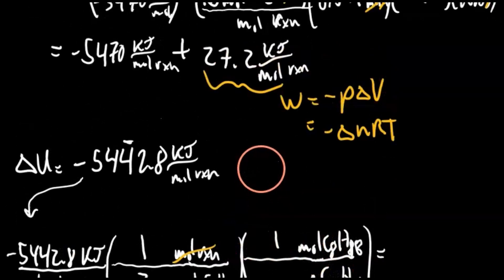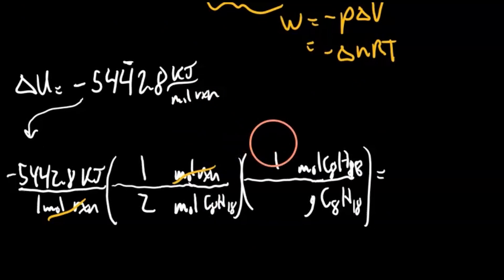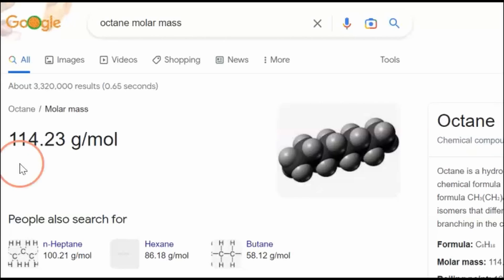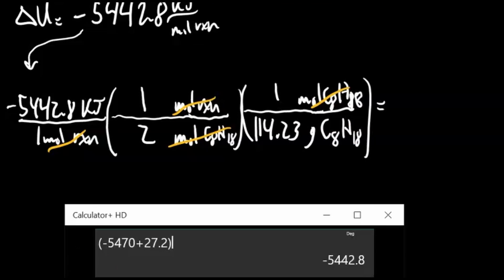So for every one mole of octane, we've got to find out, use the molecular formula to find out what the molar mass is. I just Googled it just to make it quick and easy. You can get it from the periodic table. The molar mass of octane is 114.23. And then our moles of octane cancel out, which gives us kilojoules per gram of octane, which is what we want. So we'll plug this in.